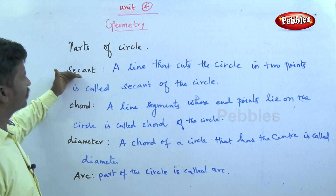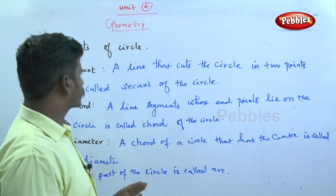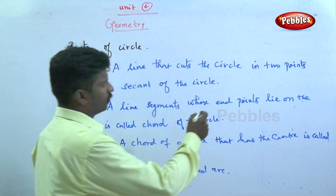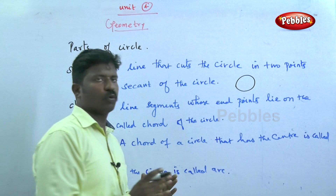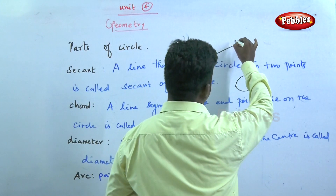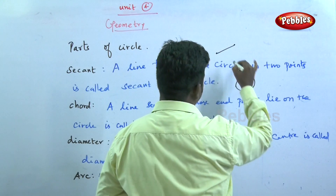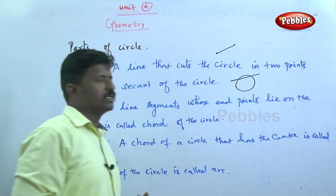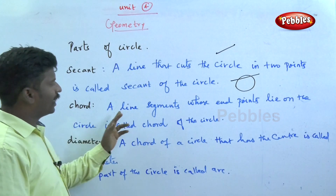The first one is secant. A line that cuts the circle in two points is called a secant of the circle. For the circle, a line cuts in two points. This is our line, and these are the two points. So the line cuts the circle at two points.